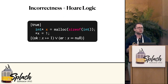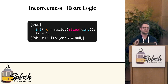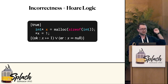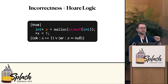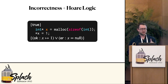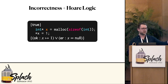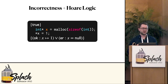Hoare logic gives you a single assertion to describe the start states and a single assertion to describe the end states, and it says if I run the program in some state satisfying the precondition then I end up in a state satisfying the postcondition. Given that we just have this one assertion, the best thing we can do is to use a disjunction to say well either this program will terminate in a state with x pointing to one, or it will terminate successfully in a state with x pointing to one, or it will crash because x is null.